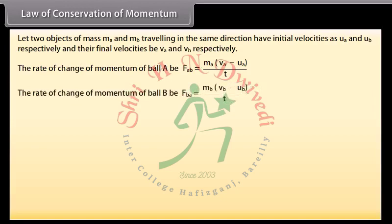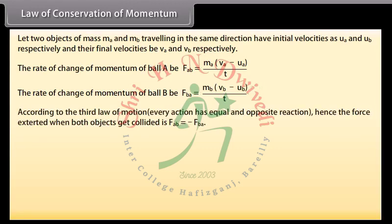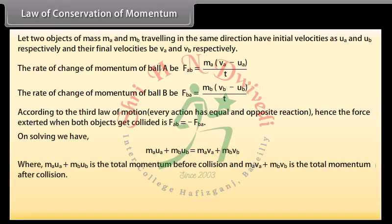The rate of change of momentum of ball B, FBA, is equal to MB into VB minus UB upon T. According to the third law of motion, every action has equal and opposite reaction. Hence, the force exerted when both objects get coiled is FAB is equal to minus FBA. On solving we have MA UA plus MB UB is equal to MA VA plus MB VB, where MA UA plus MB UB is the total momentum before collision.